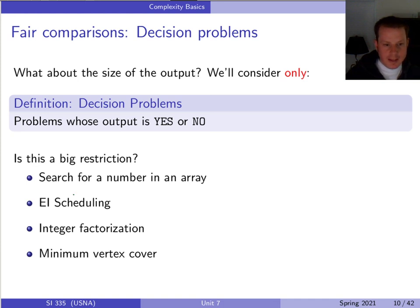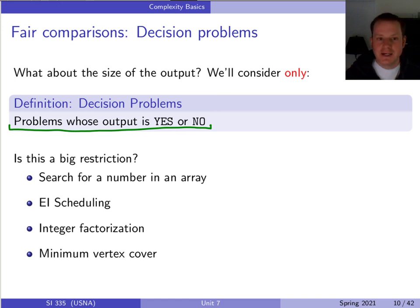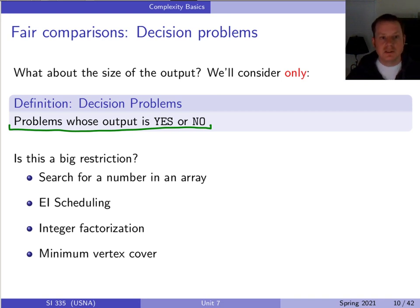One more simplification: decision problems. For a fair comparison between problems, we'll only focus on problems whose output is yes or no — similar to theory class where running something on a DFA gives accept or reject. This isn't really costing us anything since we only care about polynomial time or not. Next time we'll define the complexity class P and explain the difference between P and NP.